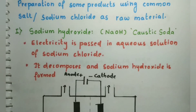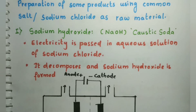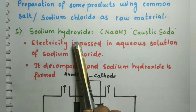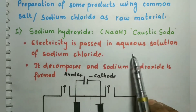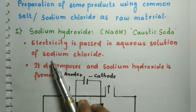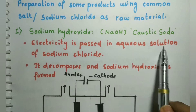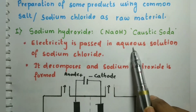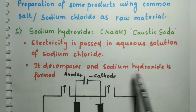We can prepare many compounds using sodium chloride as a raw material. Some of them are sodium hydroxide and bleaching powder (calcium hypochlorite). Let us see how sodium hydroxide is prepared. When electricity is passed through the aqueous solution of sodium chloride, it decomposes and sodium hydroxide is formed.